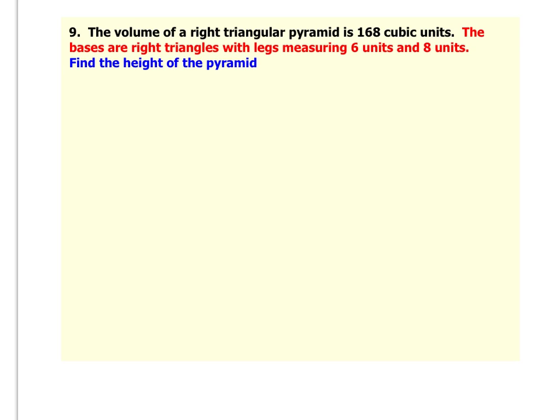Number nine, we have the volume of a right triangular pyramid is 168 cubic units. The right triangle that makes up the base of this pyramid has legs that measure six units and eight units. We want to find the height of the pyramid. So what we're going to do is, because we're dealing with a pyramid, we're doing one-third times the area of the base times the height. And because it is a right triangle, the area of the base is one-half times the base of the triangle times the height of the triangle.